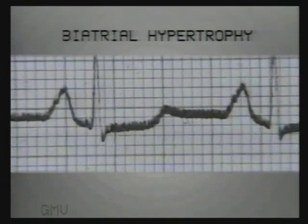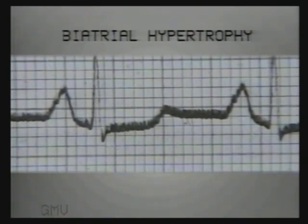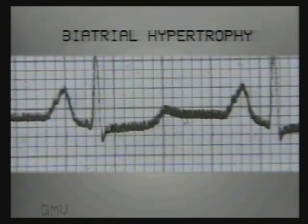If both atria are hypertrophied, the P wave in lead 2 will be taller than 2.5 small squares and broader than 2.5 small squares. This ECG demonstrates biatrial hypertrophy.